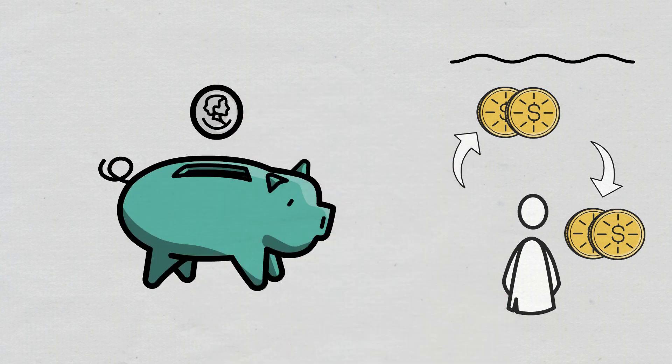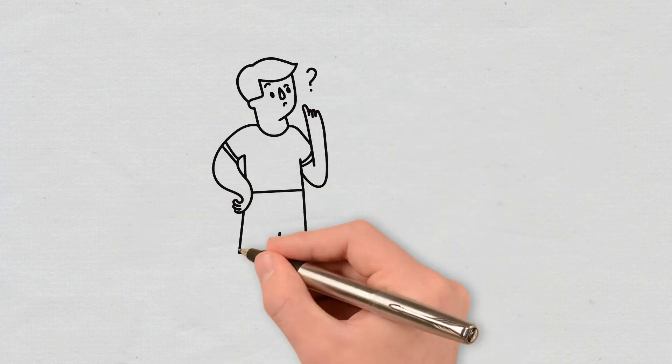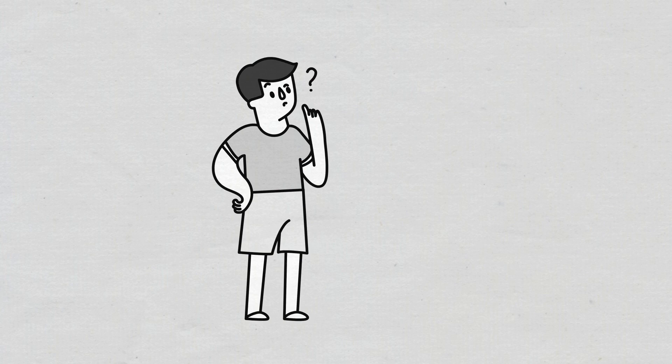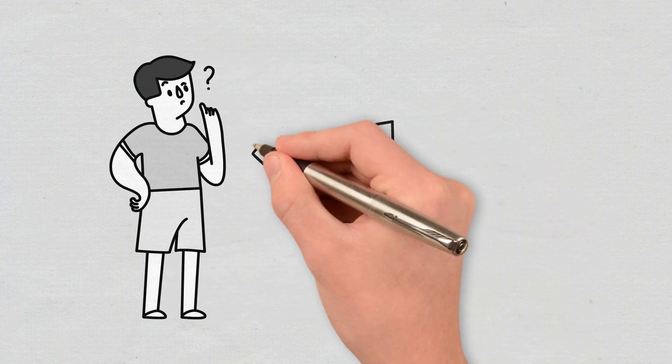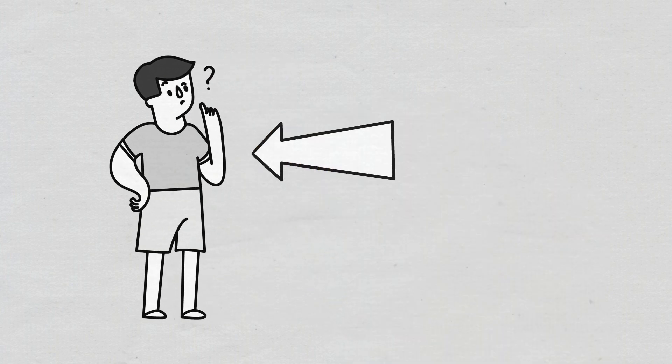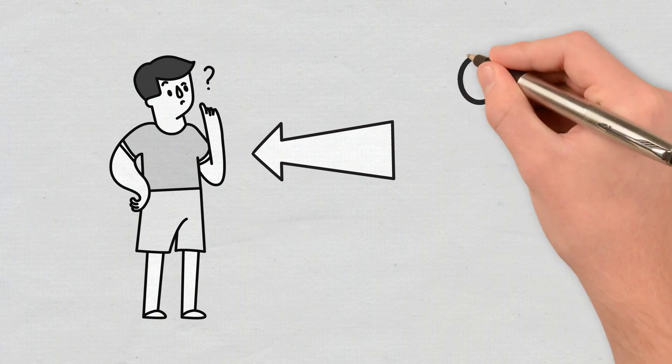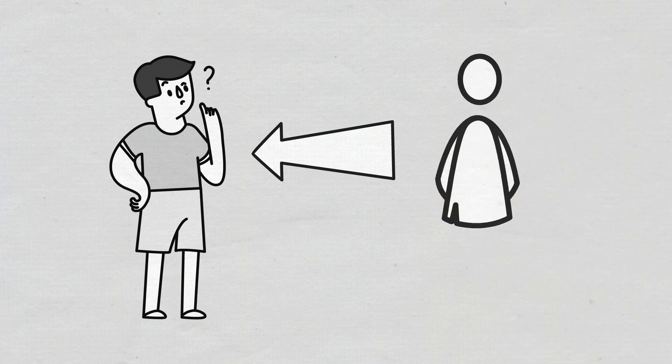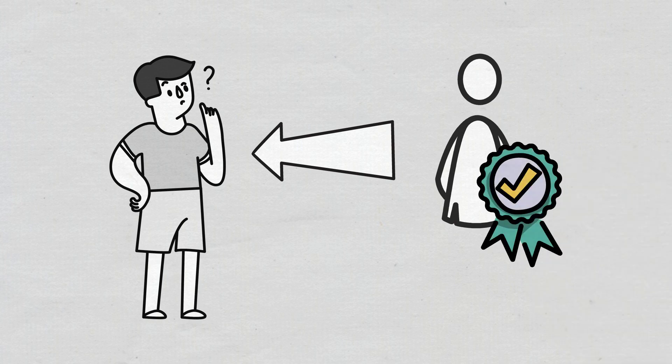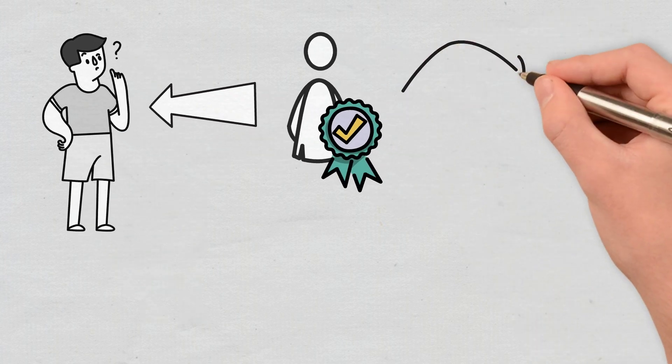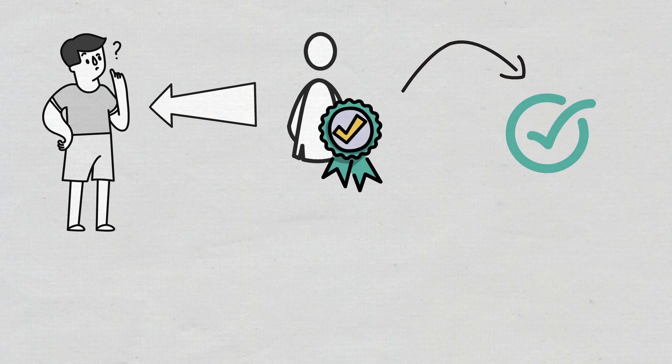The reason why a user's crypto receives rewards while being staked is due to the blockchain putting it to work. Cryptocurrencies that permit staking rely on a consensus mechanism known as Proof of Stake, which is a method of making sure that all transactions are verified and secured without having the need for a bank or payment processor to oversee that.